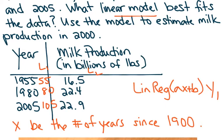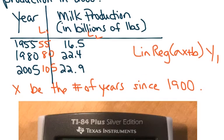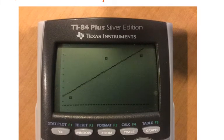And if you press Y equals, the equation should be there. And then if you go to zoom, zoom stat, as long as your stat plot is on, you should see this. These are your three ordered pairs graphed. And then the linear line would be the line of best fit.